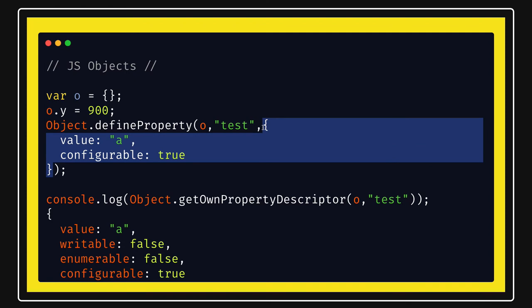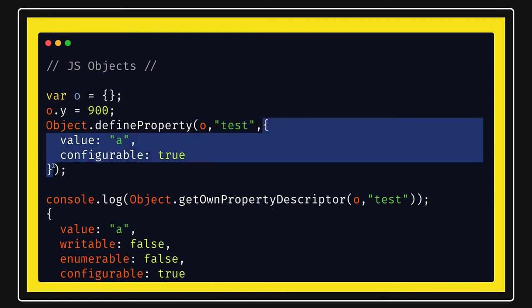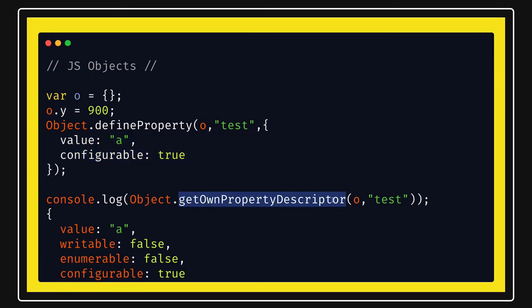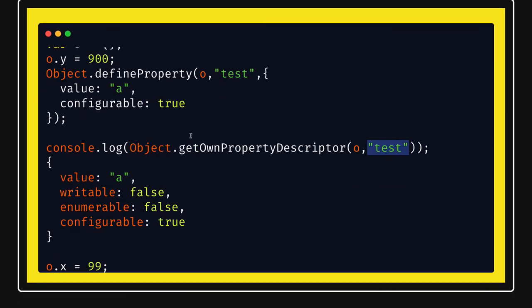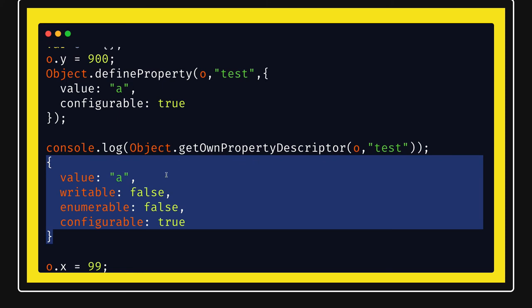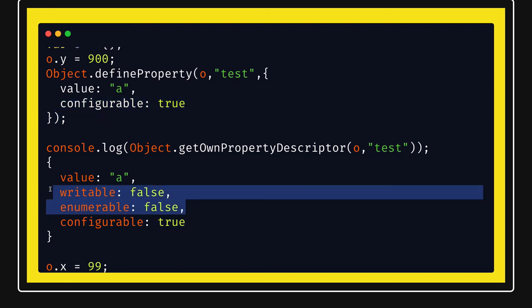The descriptor includes value, configurable, enumerable, and writable. So defineProperty takes three arguments: the object, the new property name, and the descriptor. There is also a method Object.getOwnPropertyDescriptor — you pass the object and the property name. You can see the property descriptor of this test property on the object. If you are not passing these descriptor flags, then by default configurable, writable, and enumerable will become false.